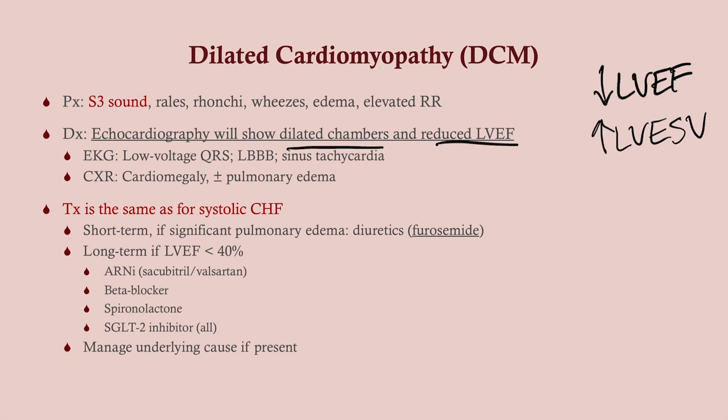Treatment is the same as for systolic congestive heart failure. For patients with ejection fraction under 40%, use an ARNI (sacubitril/valsartan), a beta blocker to increase filling and improve ejection fraction via the Frank-Starling curve, spironolactone or another aldosterone antagonist, and an SGLT2 inhibitor. The SGLT2 inhibitor is for everyone regardless of diabetes status — the other three are only for ejection fraction under 40%. SGLT2 inhibitors are cardioprotective.